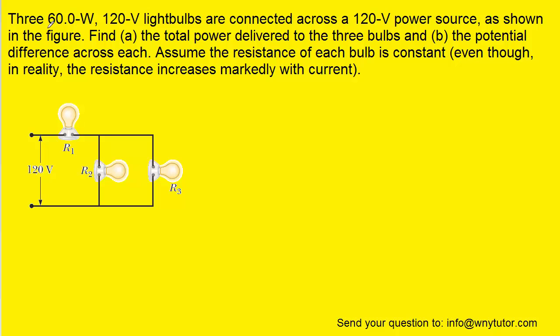We know that all three bulbs each have a power of 60 watts and a voltage of 120, and from that information we can determine the resistance of each bulb.